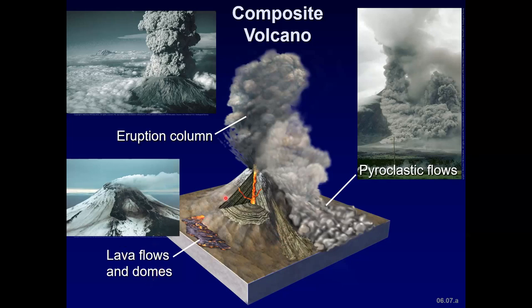You can also have lava flows and domes. Those can erupt from the summit of a volcano or on the flanks of the volcano. They have moderate to high viscosity, so they move slowly, and then the viscous lava breaks into blocks.